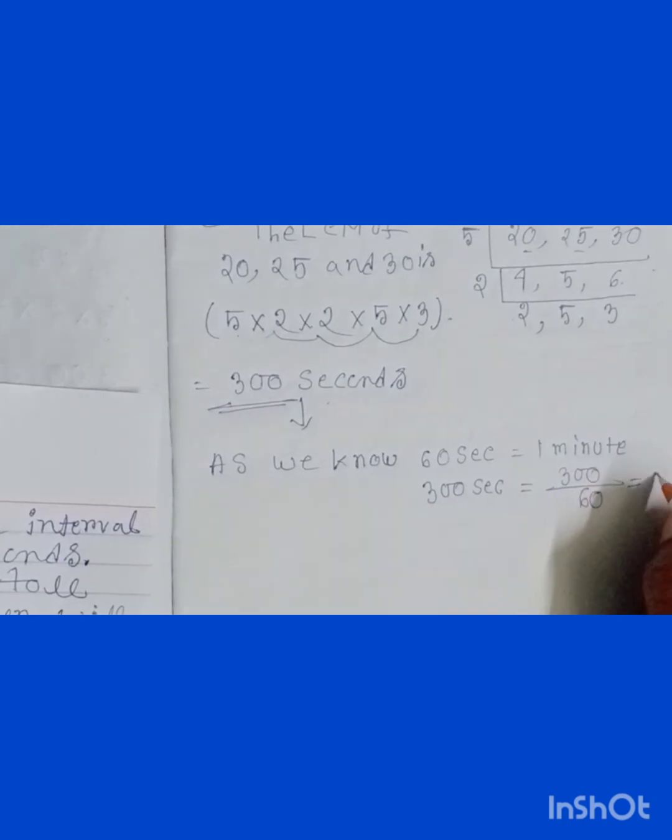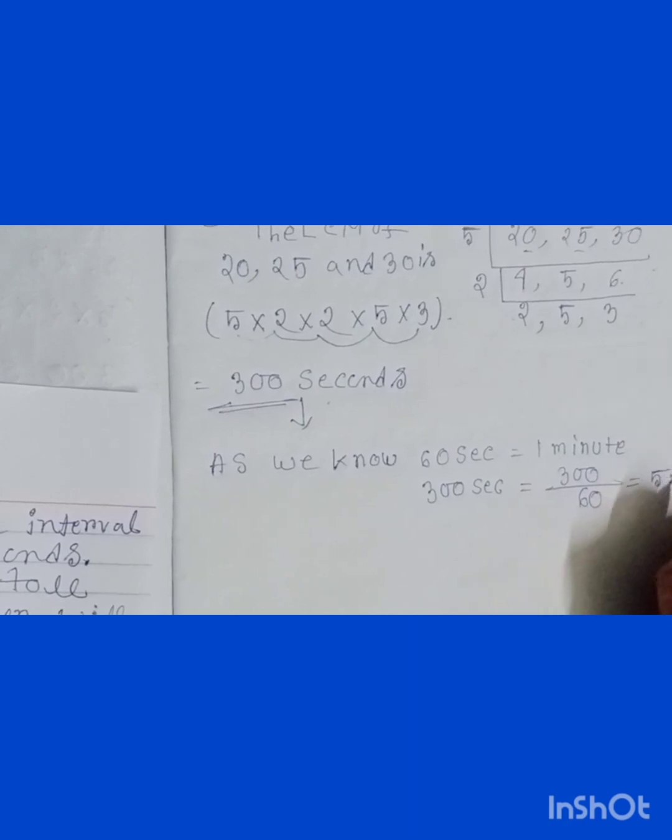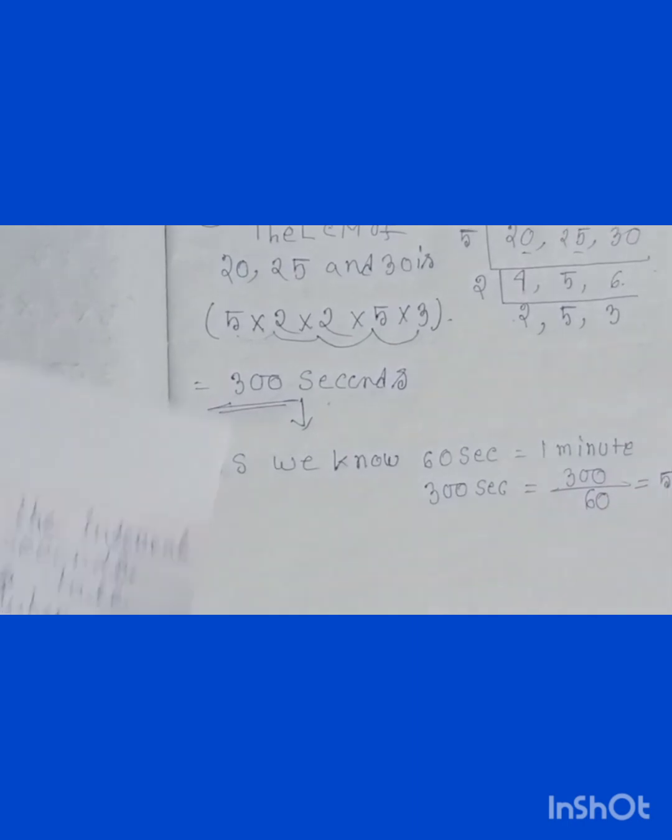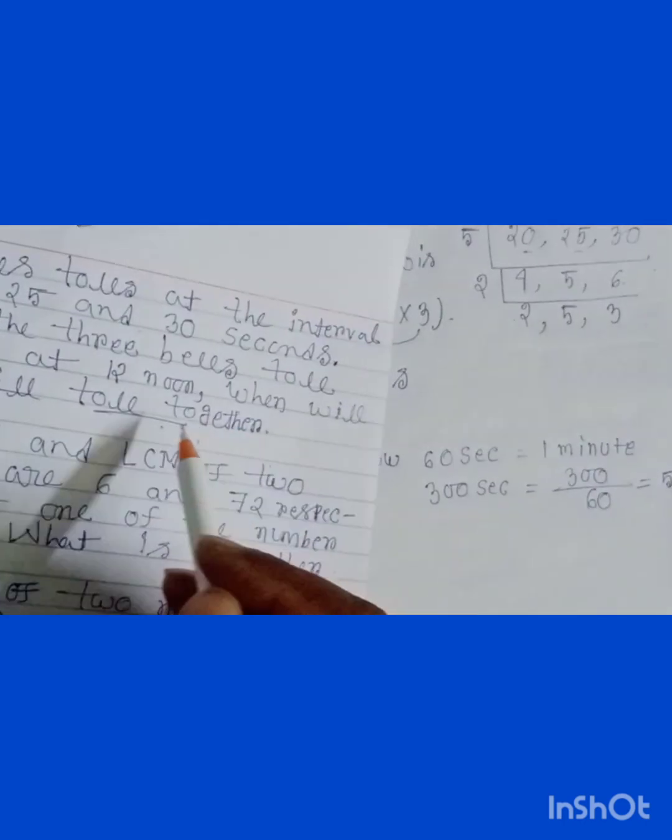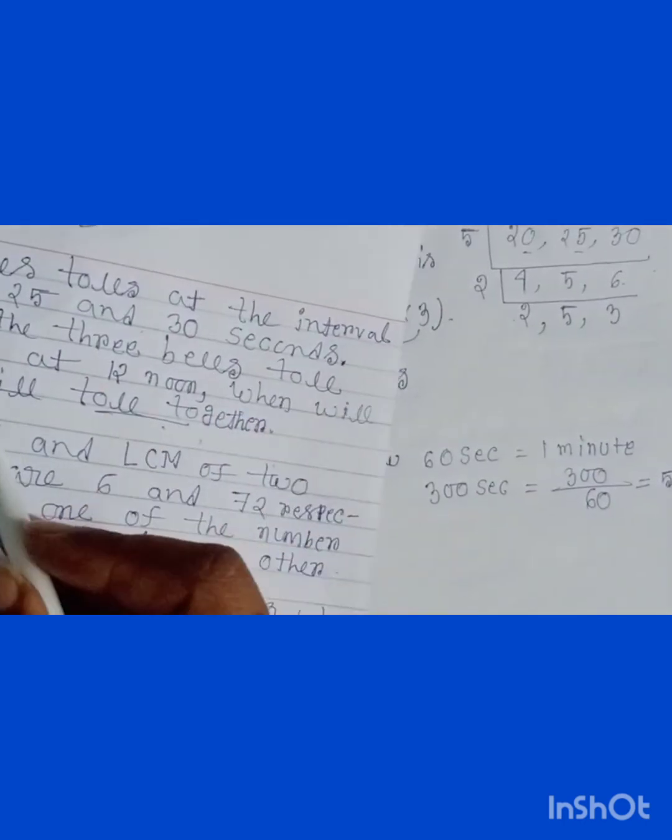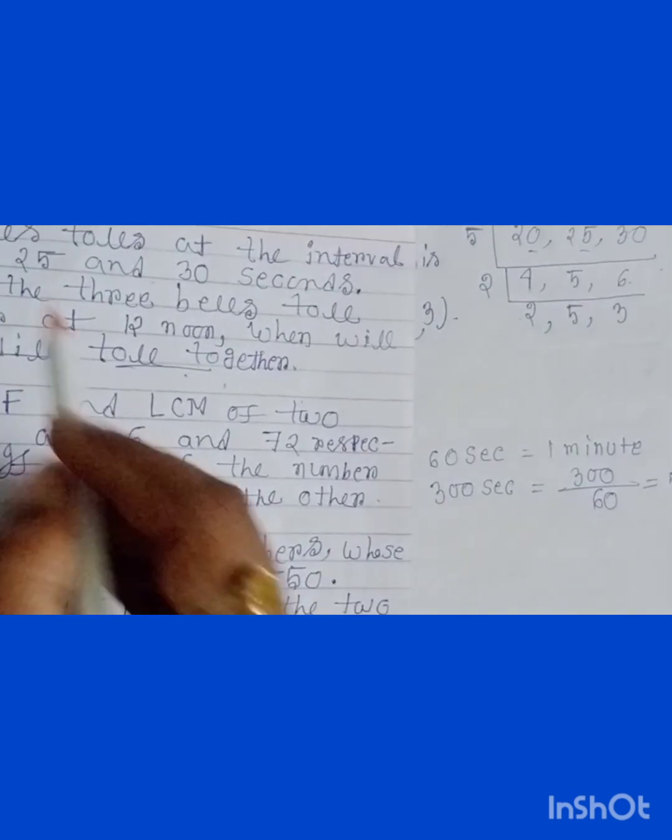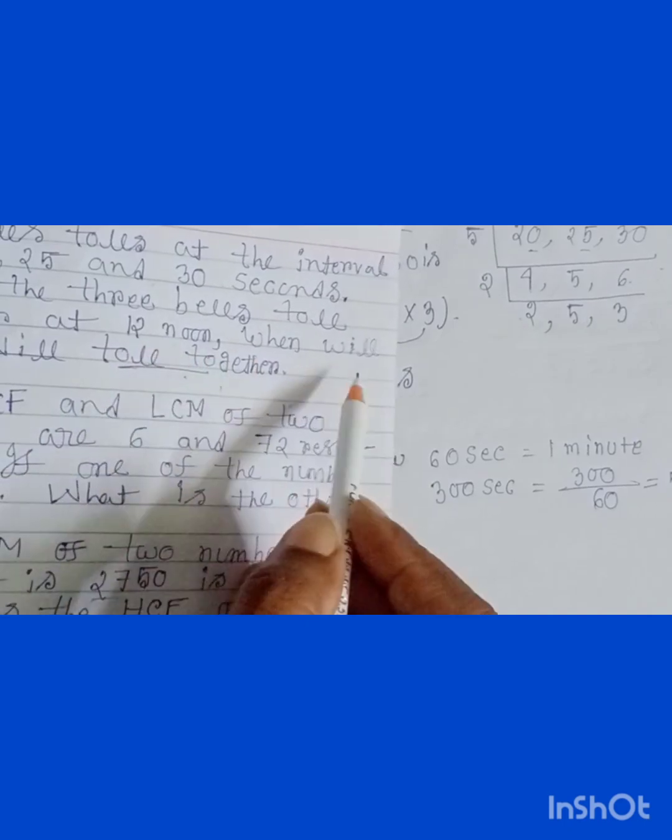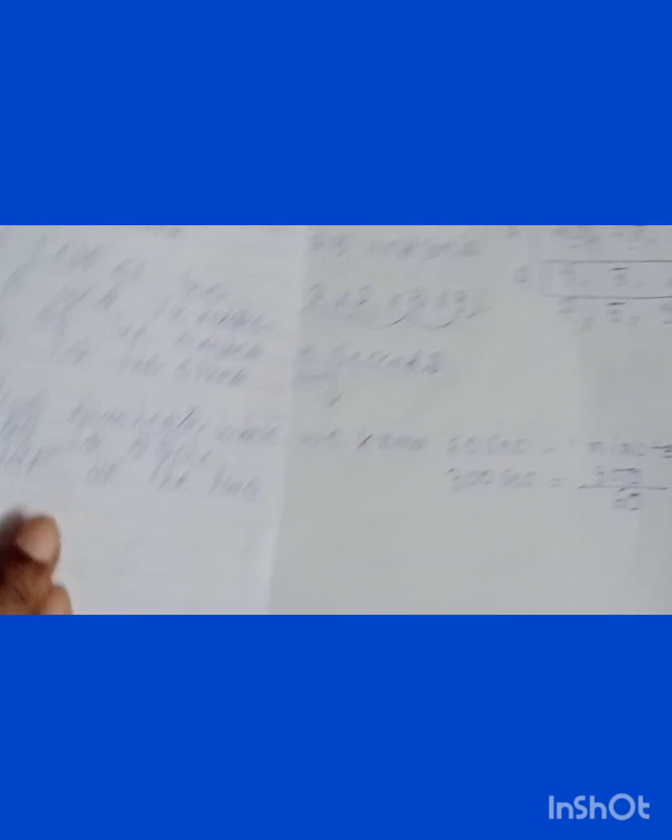So student, after that we have to calculate the time. The question is saying if all the three bells toll together at 12 noon, when will they toll together? So here you have to write...